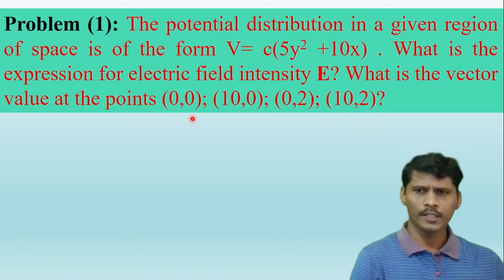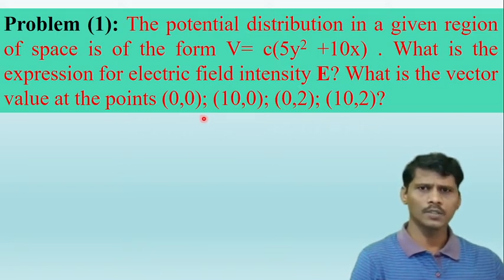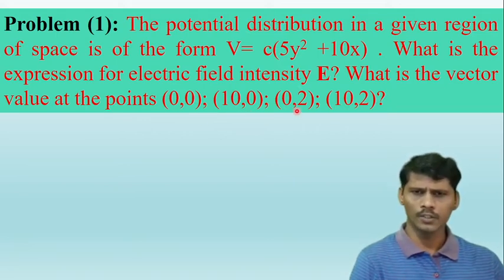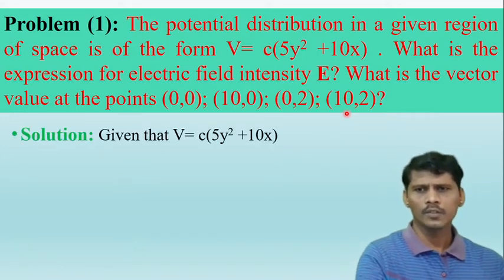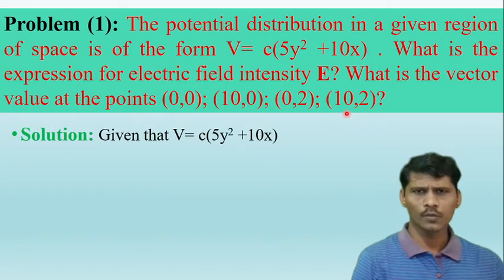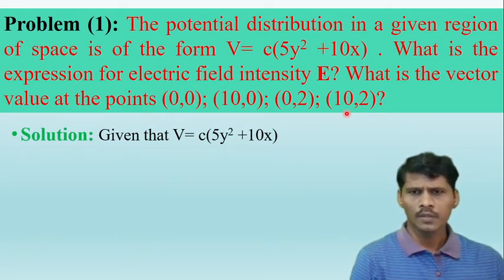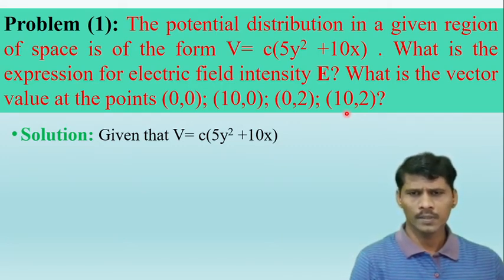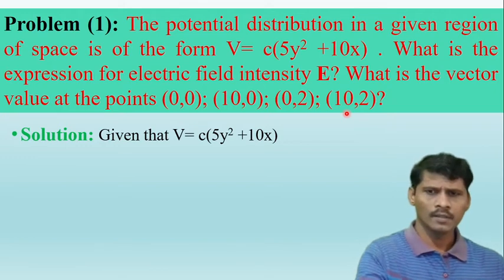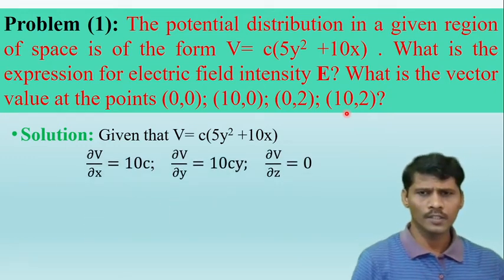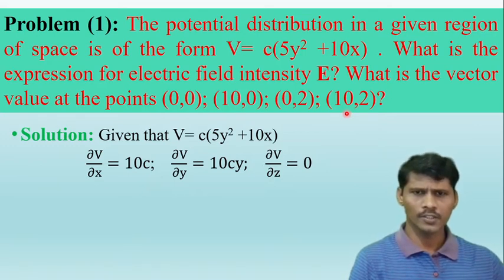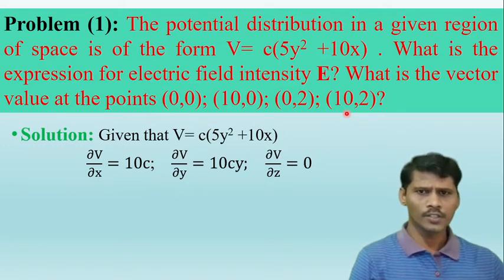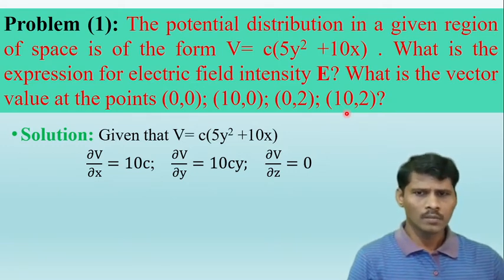After finding the expression, what is the vector value at points (0,0,0), (10,0,0), (0,2,0), and (10,2,0)? Given that the electric potential V = c(5y² + 10x), x, y, and z are the Cartesian coordinate system variables, and the given potential is in the Cartesian coordinate system.